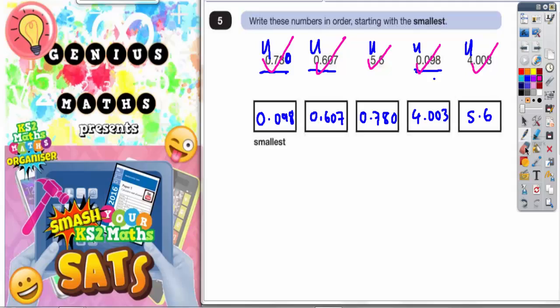You could even have done a similar thing with this one here. Made this one into 5.600. You didn't really need to do that on this one because it was obvious that a number beginning with 4 is smaller than a number beginning with 5. But had they both begun with a 5, that might have helped.